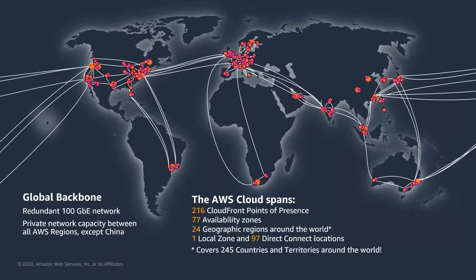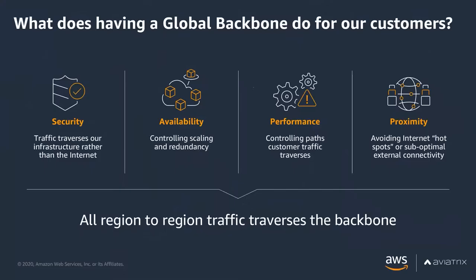We also have 97 Direct Connect locations today to connect from your on-premises environment to AWS. Everything you see on here is a redundant 100 GB Ethernet fiber network spanning the globe. It's all private network capacity, either owned or leased by AWS — that is to say, all controlled by AWS.